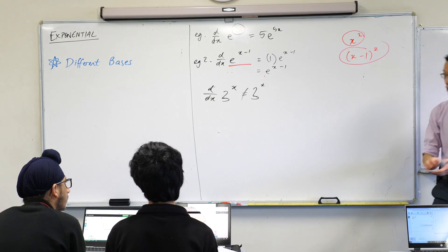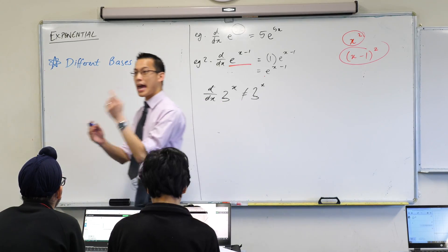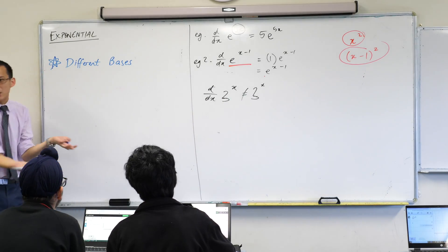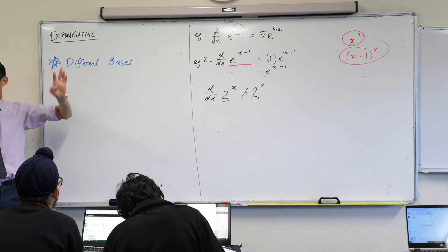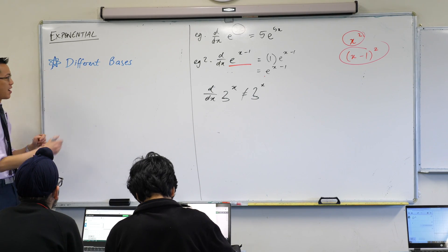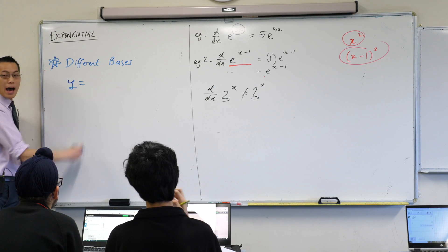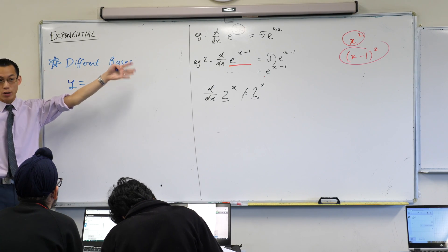What we want to do is take something which has a different base. We know what happens with e to the x - it's so lovely, it's really boring. But I want to consider what happens when you have other bases like 2 or 3 or 8 or whatever.